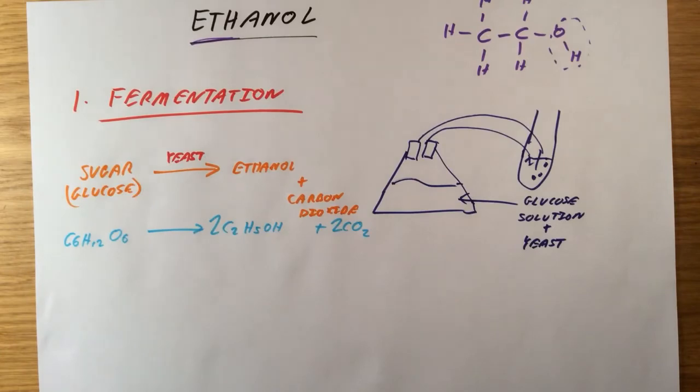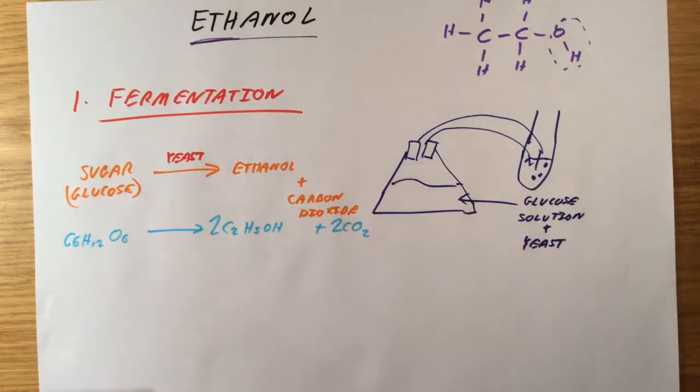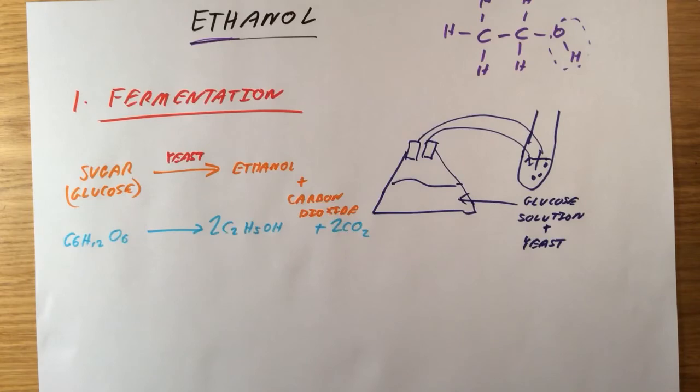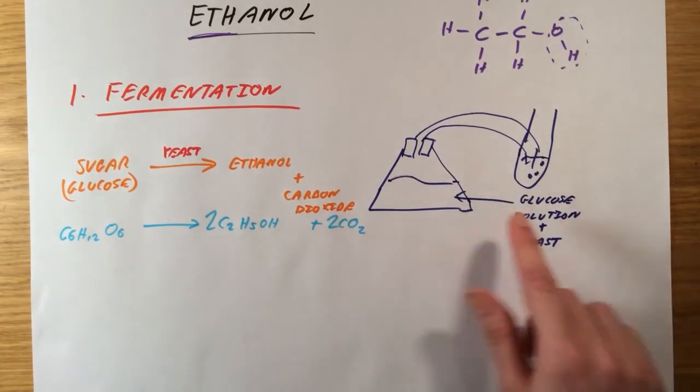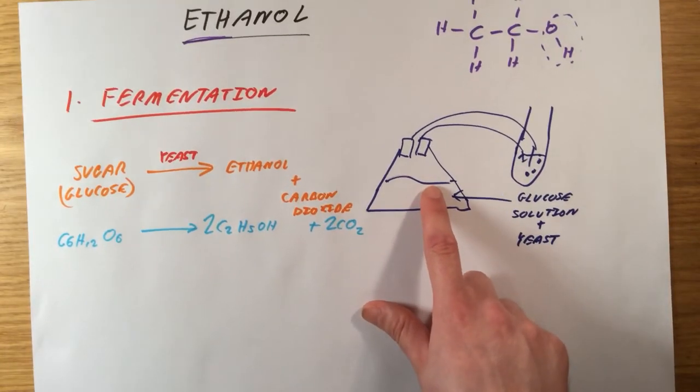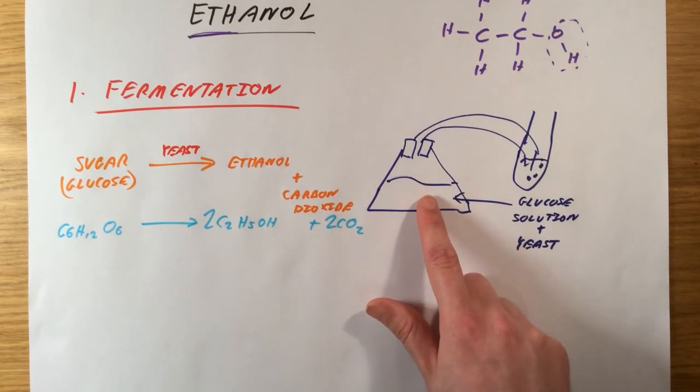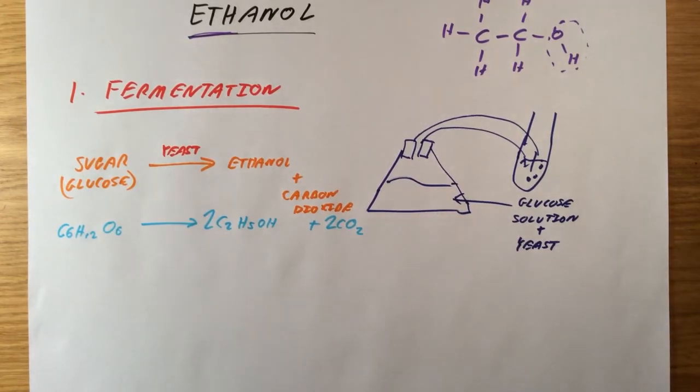This method is really good because we can get the sugar from plants. It is a renewable process, we can always grow more sugarcane or grow more grapes, whatever we are getting the sugar from. So we can always produce more ethanol in this manner. If you were to distill the solution that you've got here, you could get quite a concentrated solution of ethanol, which you could then use as a fuel. However, it is very slow.